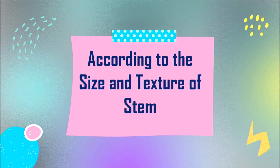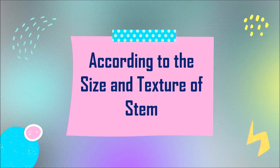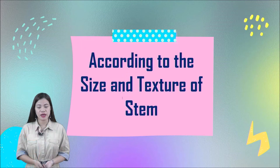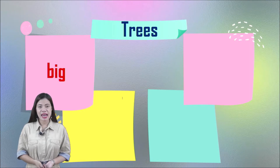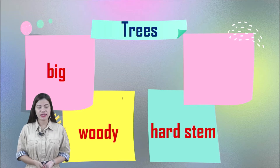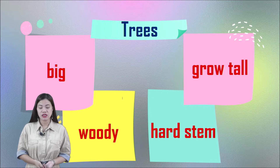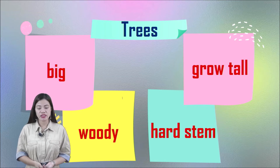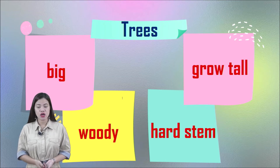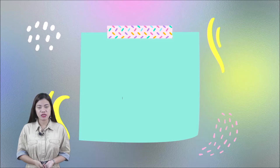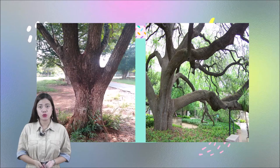Another common characteristic is according to the size and texture of stem. Trees have big, woody, and hard stems and they can grow tall. Look at this picture — they have big branches, it is woody, and they can grow tall.